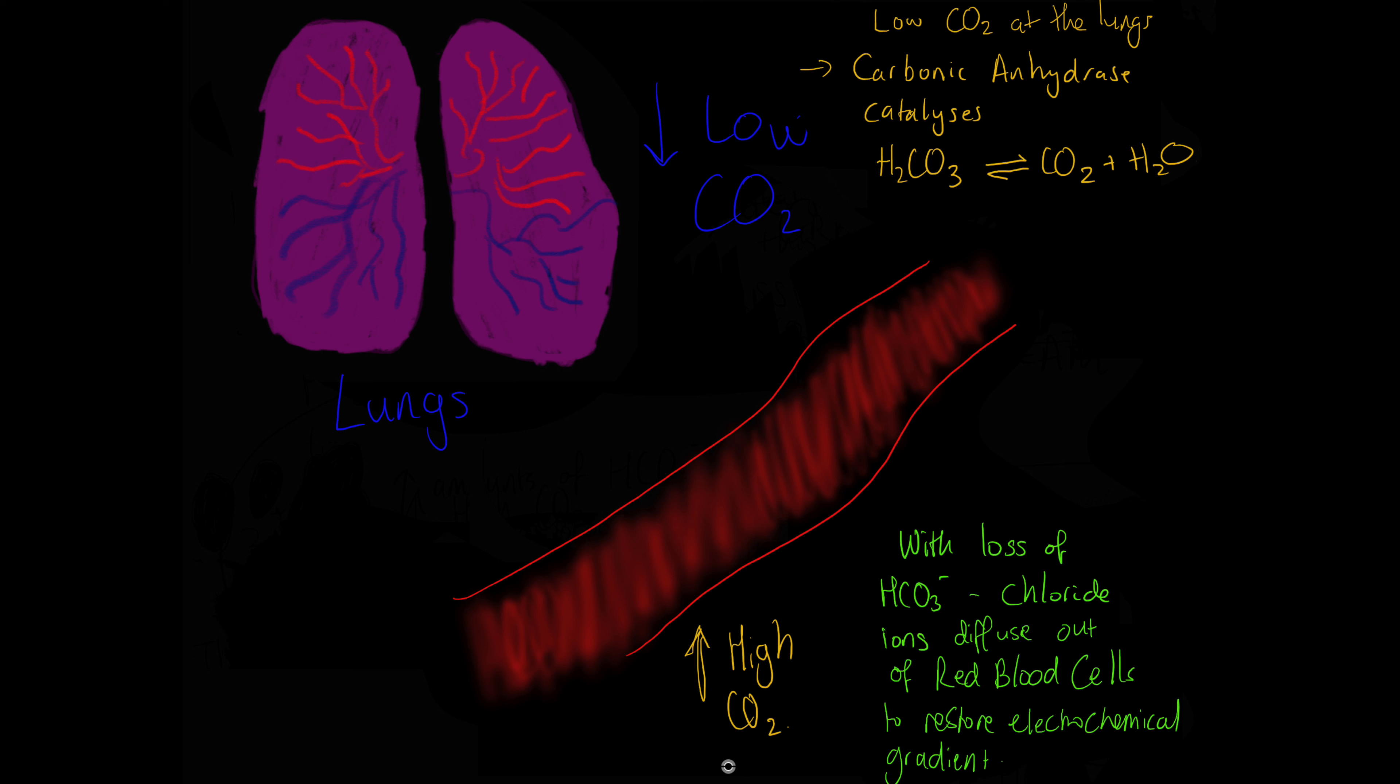Hydrogen carbonate ions then diffuse back into the erythrocytes and react with hydrogen ions to form more carbonic acid. When this is broken down by carbonic anhydrase, it releases free carbon dioxide which diffuses out of the blood and into the lungs. Chloride ions then diffuse out of the red blood cells back into the plasma down an electrochemical gradient. And that is the transport of carbon dioxide from tissues to the lungs.